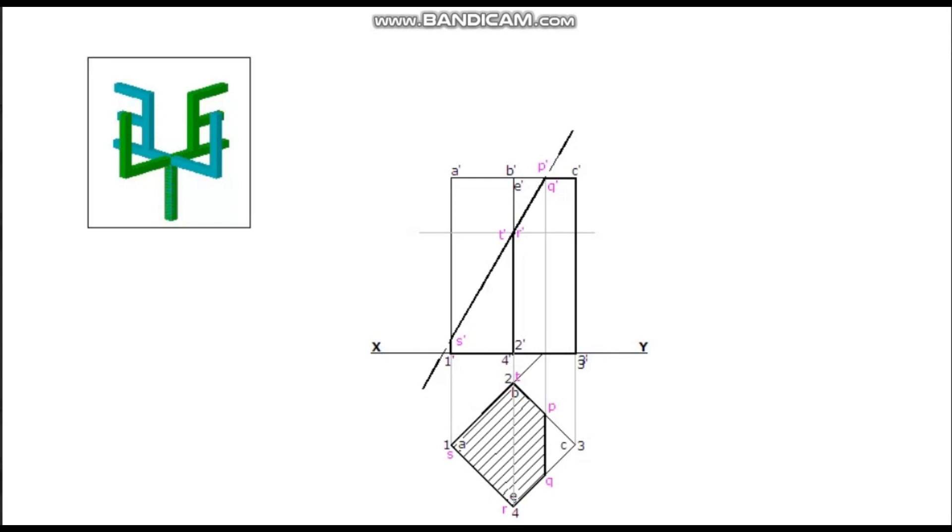Now, for drawing the true shape of the section, lines perpendicular to the cutting plane are drawn from S dash, R dash, T dash, and P dash, Q dash. Draw a reference line parallel to the cutting plane line.